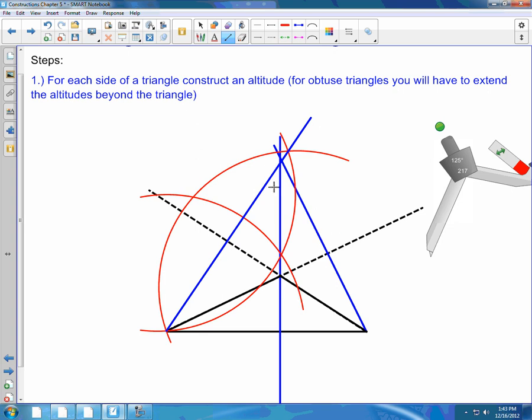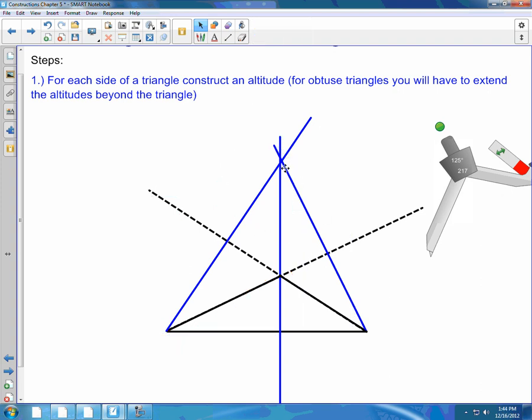And we'll see, after we clean up our picture here, that the point of intersection of the three altitudes is the orthocenter.